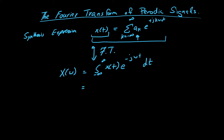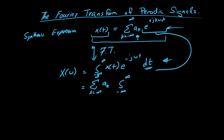Plugging in the value of x(t), we have a summation from k = −∞ to ∞ with coefficients ak, and we are left with the integral from minus infinity to infinity of e^(+jkω₀t) times e^(−jωt) dt.